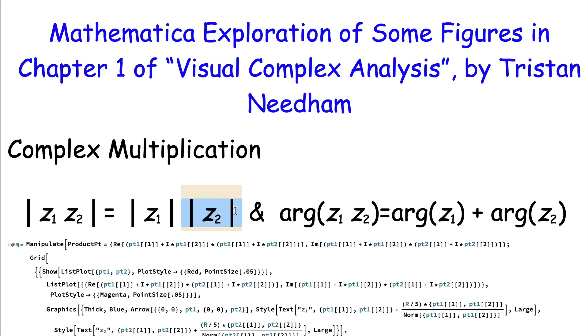The argument of the product, which is the angle that it makes with the positive x-axis, is the sum of the arguments or angles of the two complex numbers individually. That can be illustrated by running this code that you see here.